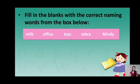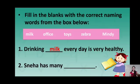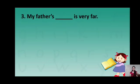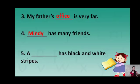Now, we have to fill in the blanks with the correct naming words from the box below. The first question is: drinking dash everyday is very healthy. The correct answer is: drinking milk everyday is very healthy. The second question is: Sneha has many dash. The correct answer is: Sneha has many toys. The third question is: my father's dash is very far. The correct answer is: my father's office is very far. The fourth question is: dash has many friends. The correct answer is: Mindy has many friends. The last question is: a dash has black and white stripes. The correct answer is: a zebra has black and white stripes.